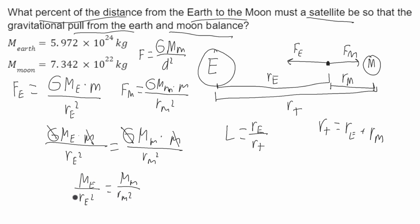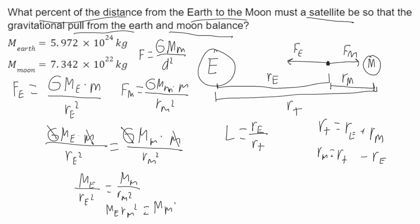Now I need to decide what I'm solving for. I'm going to solve for RM: RM is equal to RT minus RE. I'll then cross-multiply, and I'll get that the mass of the Earth times RM squared is going to be equal to the mass of the Moon times RE squared.